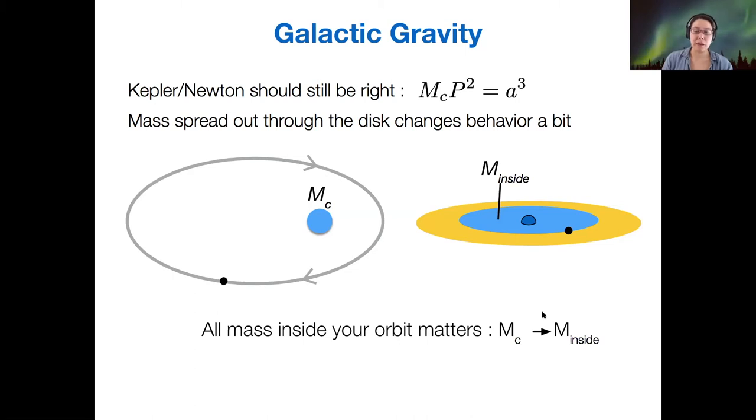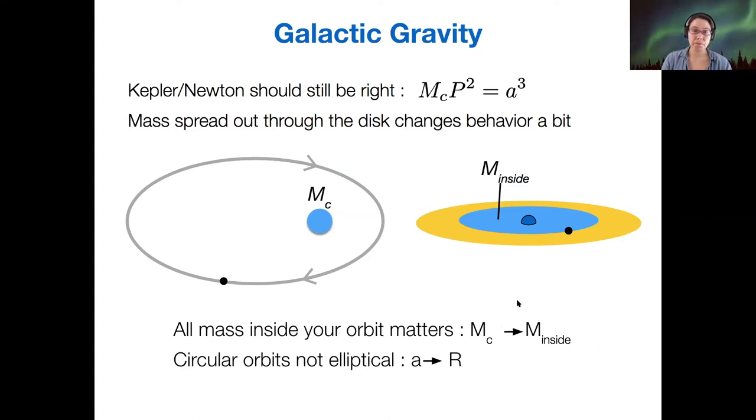The reason for that is a little bit complicated, but does go back to Newton's formulation. The other thing is that we generally assume that the galaxy is roughly circular. It has a roughly circular disk. And so we don't really need to worry about the semi-major axis, but we can, for the most part, assume that all the orbits are circular.